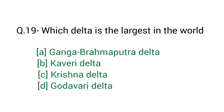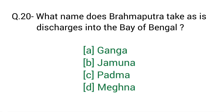Question number 19: Which delta is the largest in the world? Right answer option A: Ganga-Brahmaputra delta. Question number 20: What name does Brahmaputra take as it discharges into the Bay of Bengal? Right answer option D: Meghna.